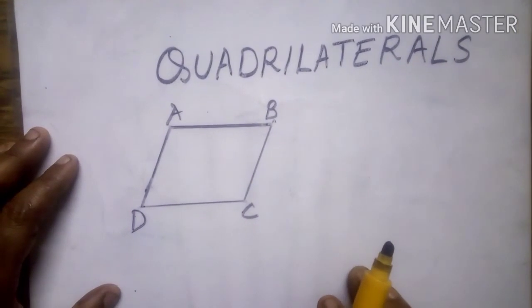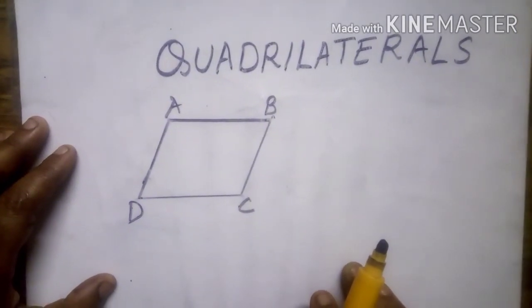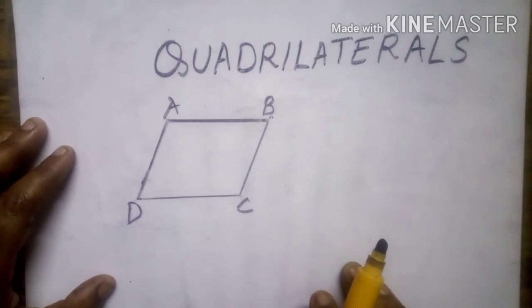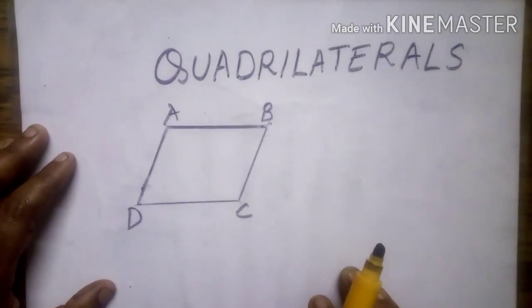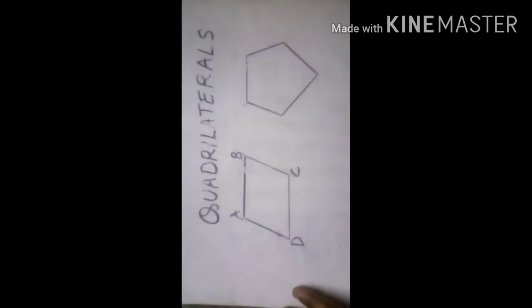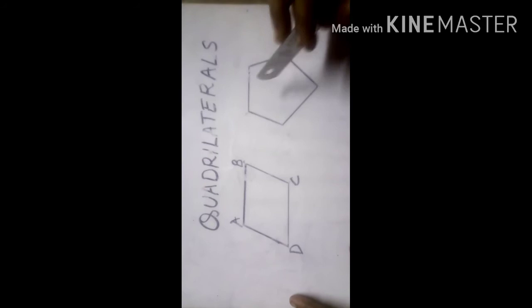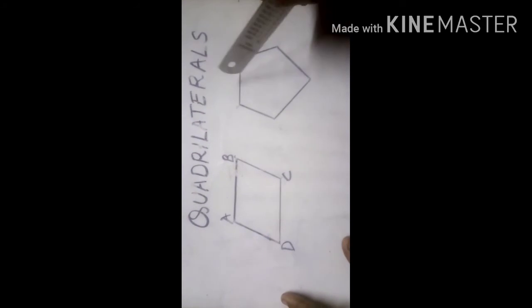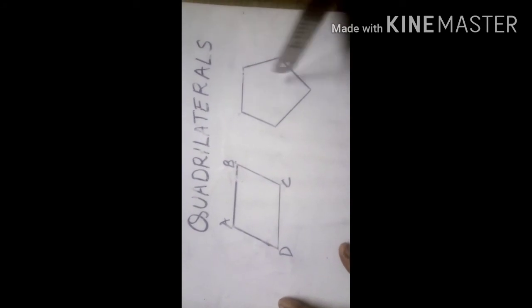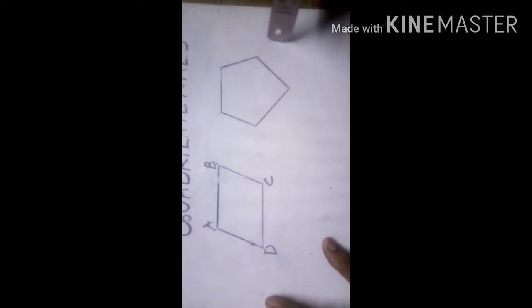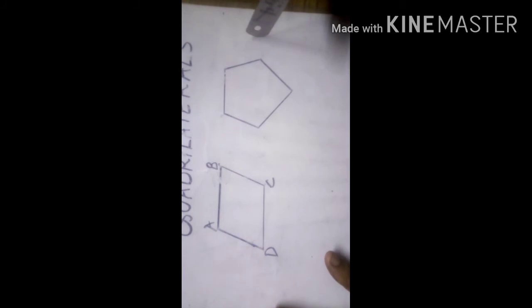You may already know about the rectangle and the square — they are special types of quadrilaterals. A polygon can also be made of more than four line segments. For example, five line segments form a pentagon, or it can be six or seven segments. A polygon can be made of more than four line segments.